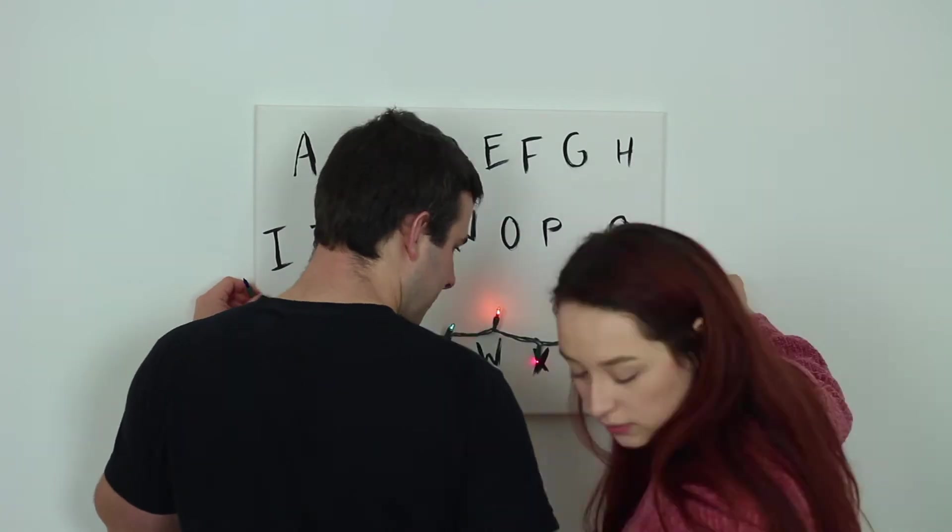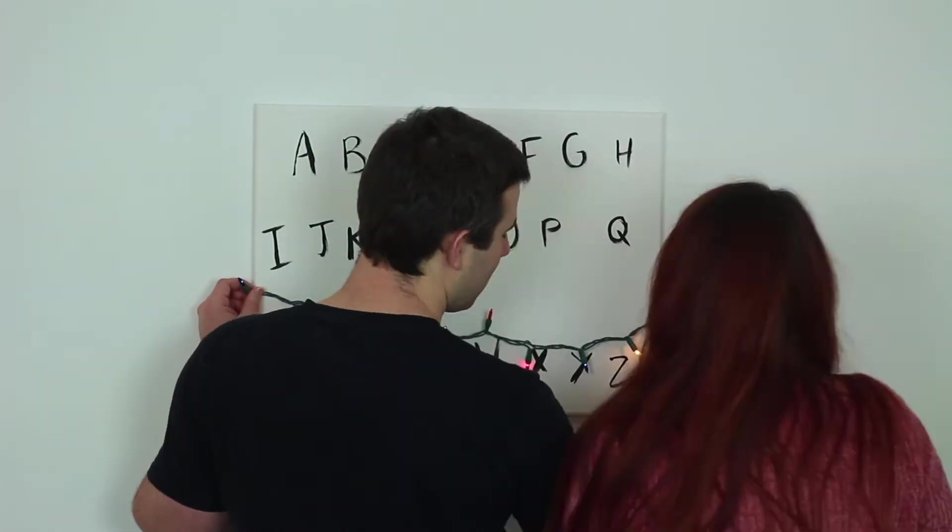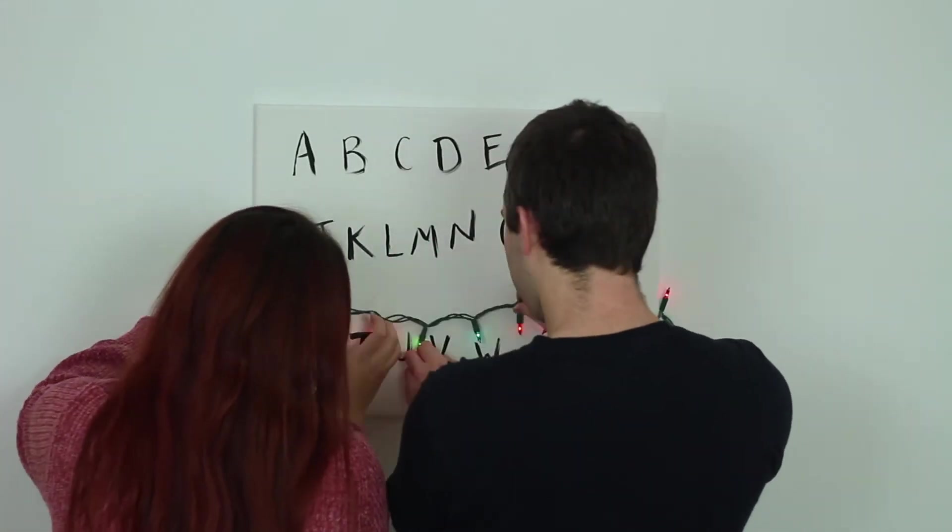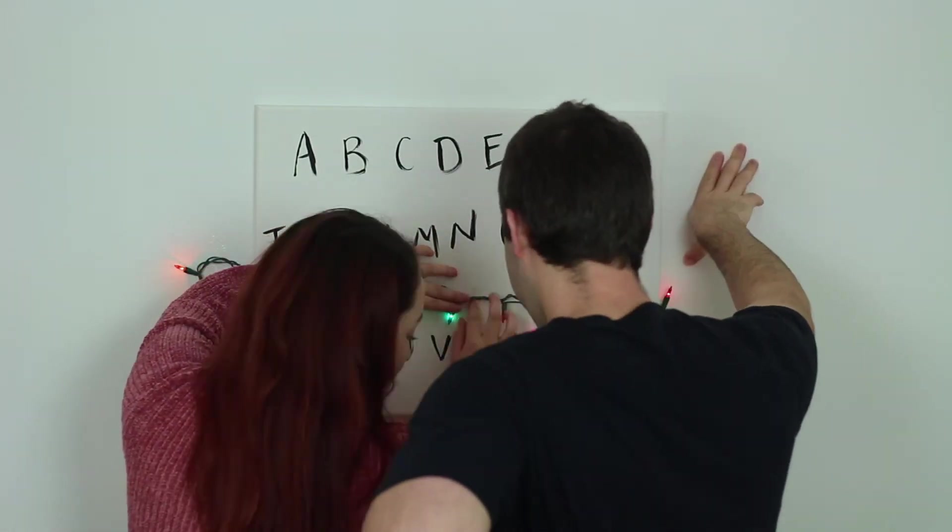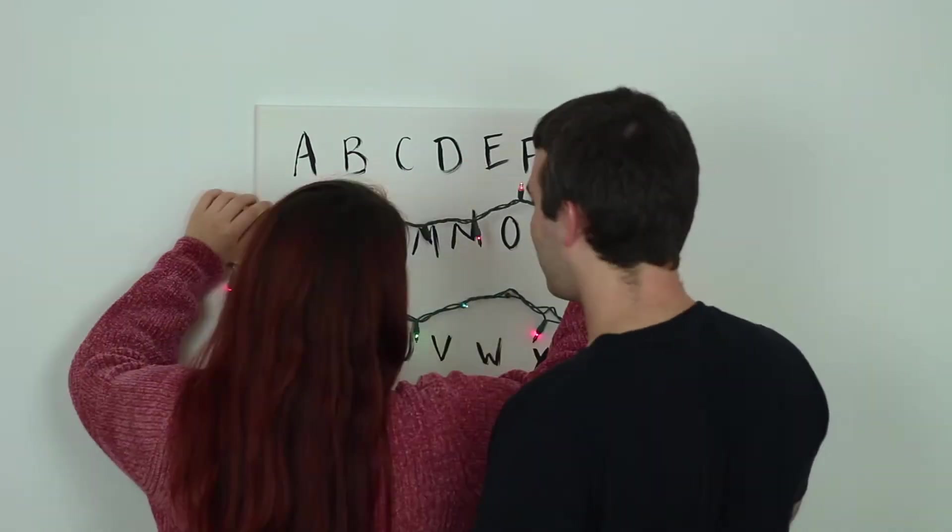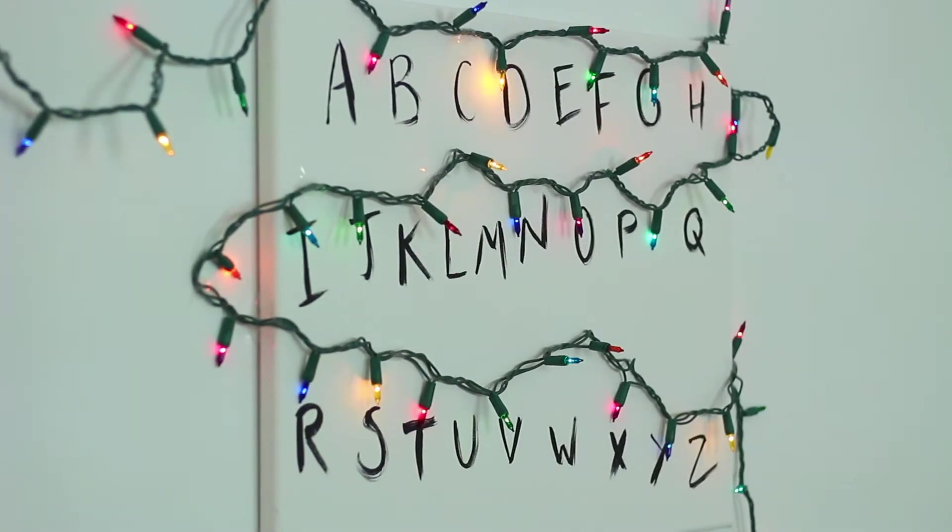Honestly taping up the lights was the most difficult part. Here's my boyfriend helping me because this was so frustrating trying to get it to stay on the canvas. But overall I think it turned out really cute. Once you kind of get the hang of how to tape them on it goes pretty smoothly.